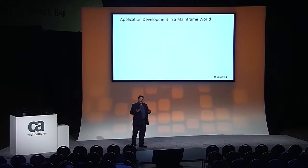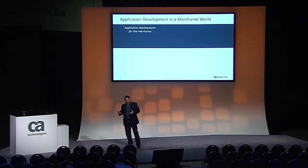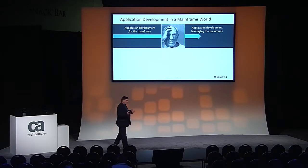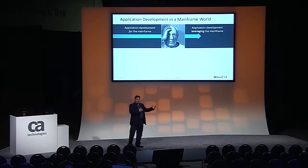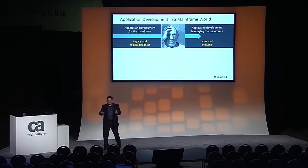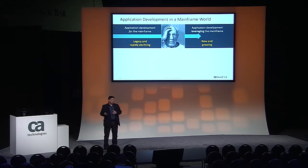To refresh your memory: where is application development coming from when you think about what CA used to think of as the mainframe application development world, compared to where it is today, which is leveraging all our assets in the mainframe? That's changed our world in a way that we no longer have to worry about staid, declining environments, but now really have to worry about this rapidly changing agile development world where it's growing by leaps and bounds.